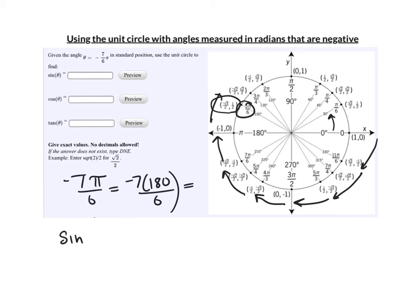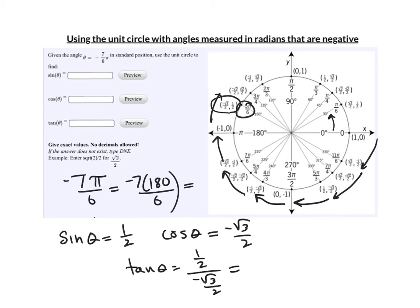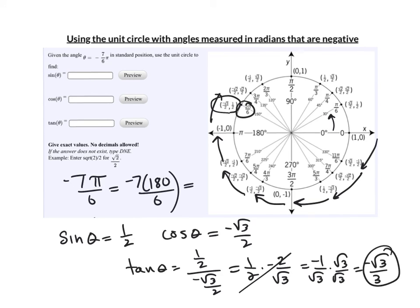I know the sine of theta is y over r — it's just y — so it's 1 half. The cosine of theta is x over r — r is 1, it's x — and it's negative root 3 over 2. The tangent of theta is y over x: 1 half over negative root 3 over 2. Multiplying by the reciprocal gives negative 2 over root 3. Canceling the 2's gives negative 1 over root 3. Rationalizing, I get negative root 3 over 3. So the sine is 1 half, the cosine is negative root 3 over 2, and the tangent is negative root 3 over 3.